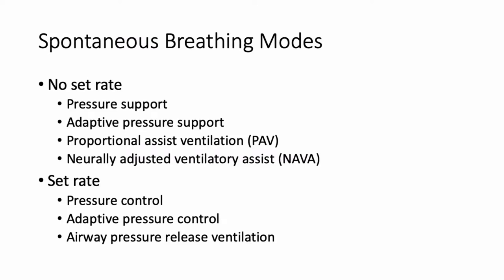There are a number of ventilator modes intended to allow spontaneous breathing. With some of these there is no set rate, so it relies upon the patient's brainstem to trigger each breath — those include pressure support ventilation, adaptive pressure support, proportional assist ventilation, and neurally adjusted ventilatory assist. There are also modes that promote spontaneous breathing but have a backup rate set on the ventilator, such as pressure control, adaptive pressure control, and airway pressure release ventilation.